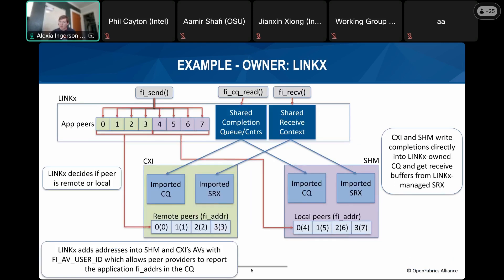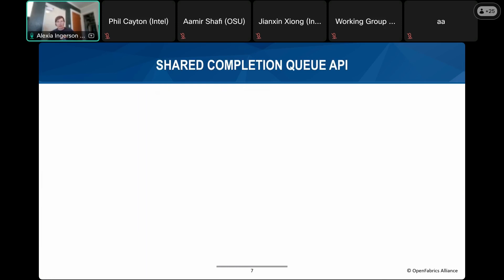In the link example, link owns all the resources and CXI and shmem can access them because they were imported. The same addressing issue applies, so link uses the same fi_av_user_id flag when adding addresses into the peer. In this method, link doesn't actually do any transfers — it is the owner of the resources and is responsible for passing communication calls to the correct provider, as well as polling the peer provider CQs to drive progress.